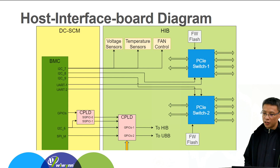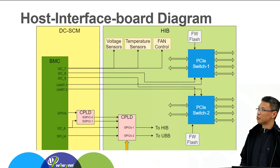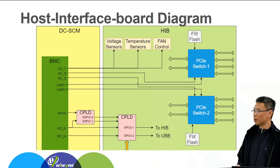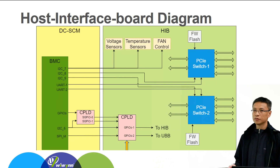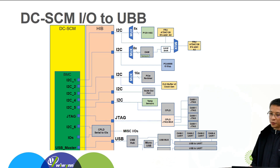The diagram of HIV shows the interfaces from DCS-CM to the host interface. They are I2C, UART, and GPIOs. The CPLD on HIV is the key component to convert GPIO for HIV and UVB usage. For UVB usage, we can also map I2C, SATA, USB, and GPIOs from DCS-CM.